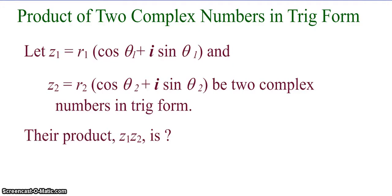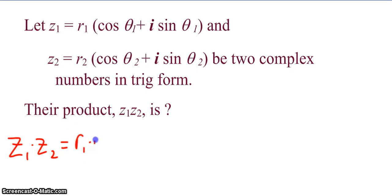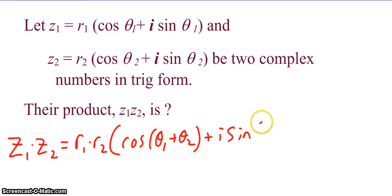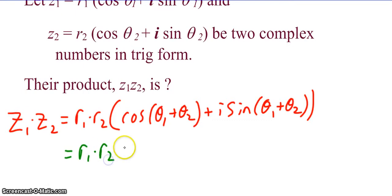Now let's look at finding the product of two complex numbers in trig form. This is one area where trig form is actually a little nicer, because operations in trig form are pretty easy. The product z1 times z2 is the product of the r values — r1 times r2 — times the cosine of theta 1 plus theta 2, plus i sine of theta 1 plus theta 2. In shorthand: r1 times r2 times cis of theta 1 plus theta 2.